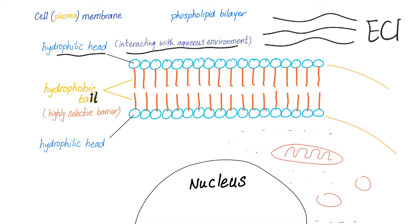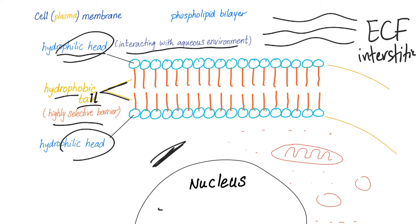So what's the purpose of the hydrophilic head? It interacts with the aqueous environment outside in the extracellular fluid, also known as the interstitial fluid, which is between the cells. What's the purpose of the hydrophobic tail? It's a highly selective barrier because not everything can pass through lipids. You have to be a lipid to pass through a lipid, or we have to wrap you in like a vesicle or something, which we will discuss later.